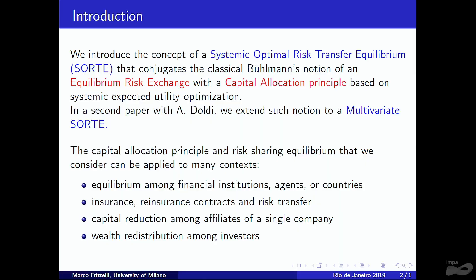We extend SORTE by adding a truly multivariate systemic component, which we call Multivariate SORTE. This can be applied in several different settings — typically equilibrium among countries, agents, or financial institutions. The Bühlmann original notion was established for insurance contracts in the insurance market, but you can also think of wealth distribution or capital allocation.